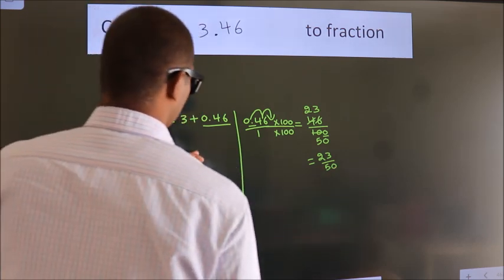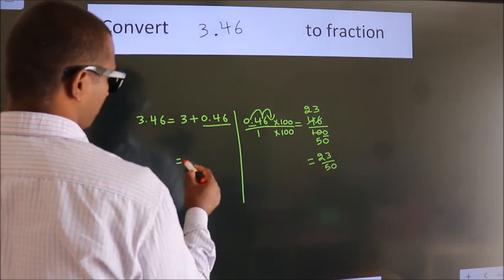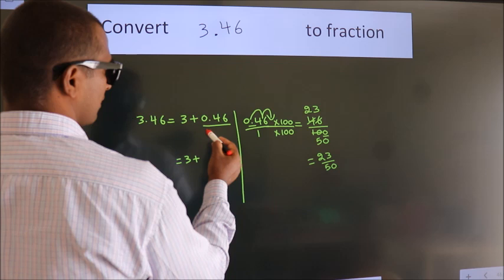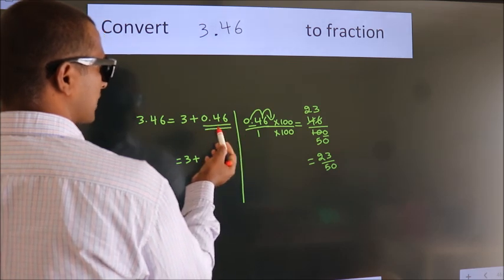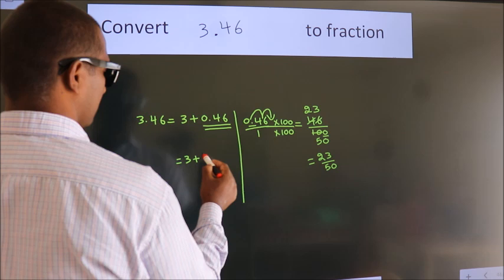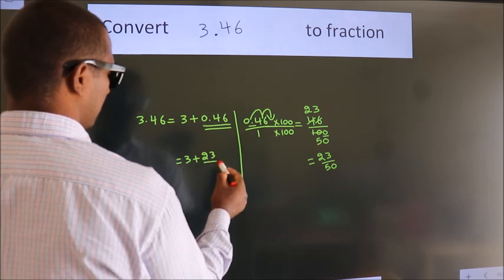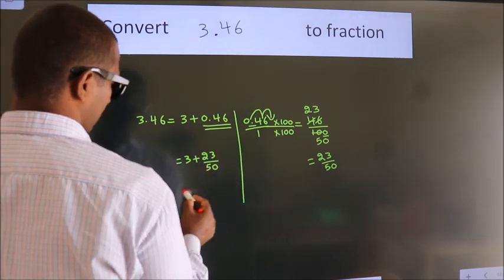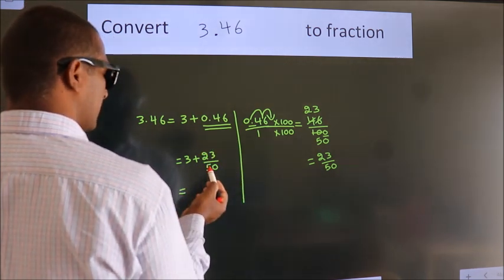Now here, in place of 0.46, we write this fraction 23 by 50. So 3 plus 23 by 50.